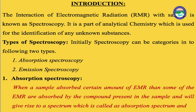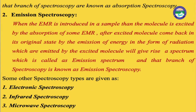Further, on the basis of absorption or emission, spectroscopy can be categorized into different classes: electronic spectroscopy, infrared spectroscopy (IR spectroscopy), microwave spectroscopy, Raman spectroscopy, nuclear magnetic resonance (NMR) spectroscopy, and mass spectrometry. These are the different types of spectroscopy, and each spectroscopy has its own particular function.